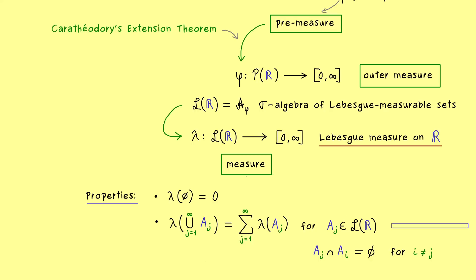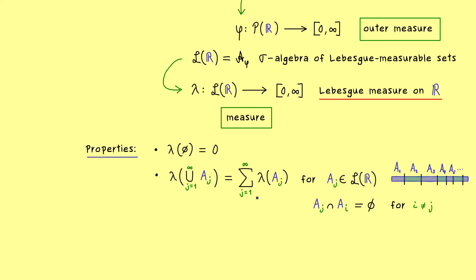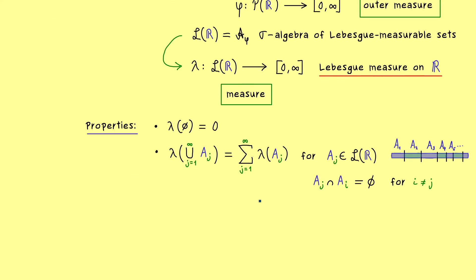In our case, sigma additivity is easy to understand: if you have a given measurable subset of R, you can split it up into countably many disjoint parts, calculate the lengths of the different parts, and they will add up to the length of the whole set. This is what we expect of a well-defined measure. Please remember that we need disjoint sets and can only go to countably many — this property is also the reason why we want to have a sigma algebra.